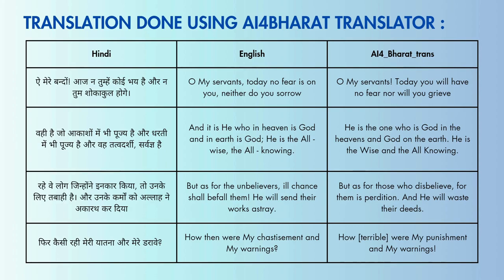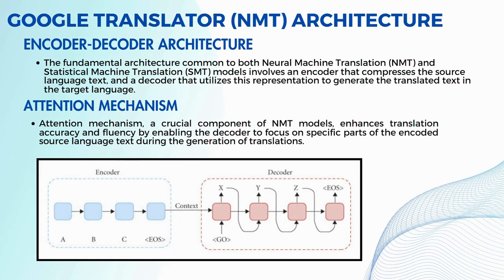Now I will explain the architectures of Google Translator and AI4Bharat Translator. In Google Translator, the translation models NMT and SMT are common. These share a main architecture in which an encoder and a decoder are present. The encoder condenses information from the original text while the decoder uses this condensed information to produce the translated text. The Attention Mechanism is a key feature in NMT, helping improve translation quality by allowing the decoder to pay more attention to specific parts of the original text while generating the translation, making the process more accurate.